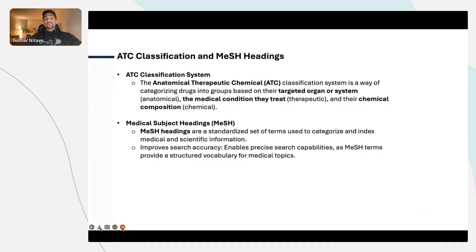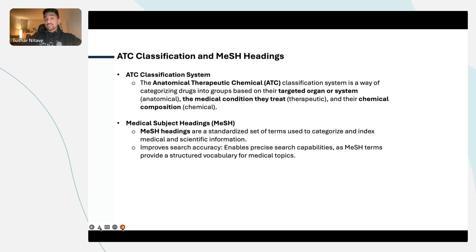When we talk about pharma data, there are two important concepts. One is the ATC classification and another is MeSH headings. ATC classification is a therapeutic chemical classification system using which every approved drug in the market is categorized into certain groups based on the organ they treat, the medical conditions they treat, and the chemical composition they have. This ATC classification is really important to understand what a drug is, how it performs, and what medical composition it has.